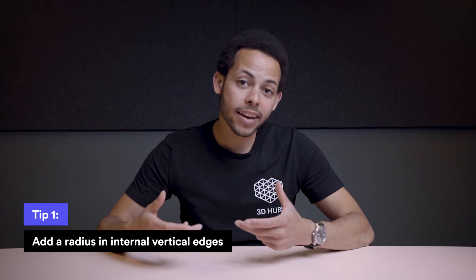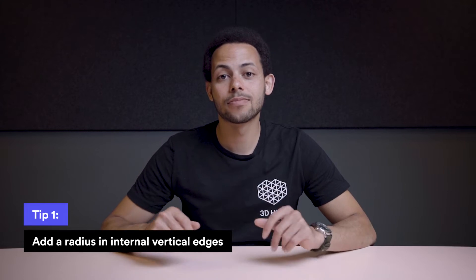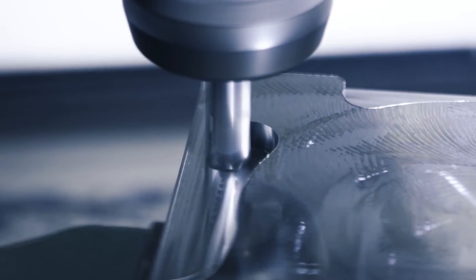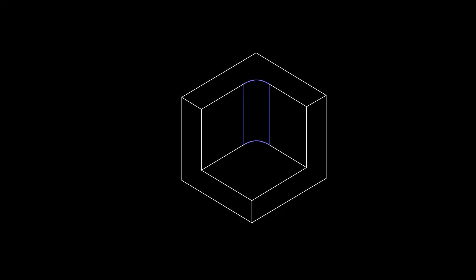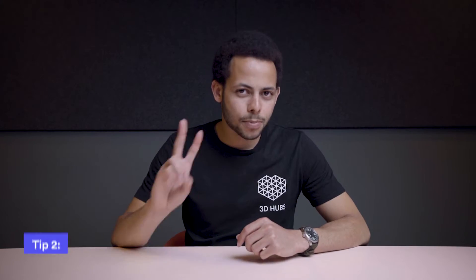Tip number one: add a radius in internal vertical edges. CNC milling tools have a cylindrical shape and will create a radius when cutting the edge of a pocket. To minimize cost, add a radius of at least one third of the depth of the cavity — the larger the better. Preferably, use the same radius for all internal edges. On the floor of the cavity, you can specify 0.5 or 1mm, or no radius at all.